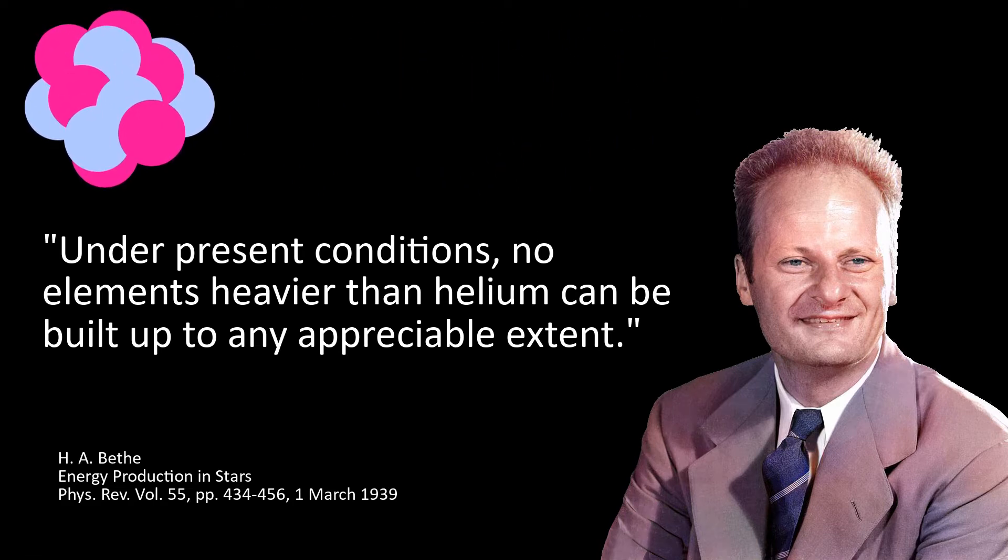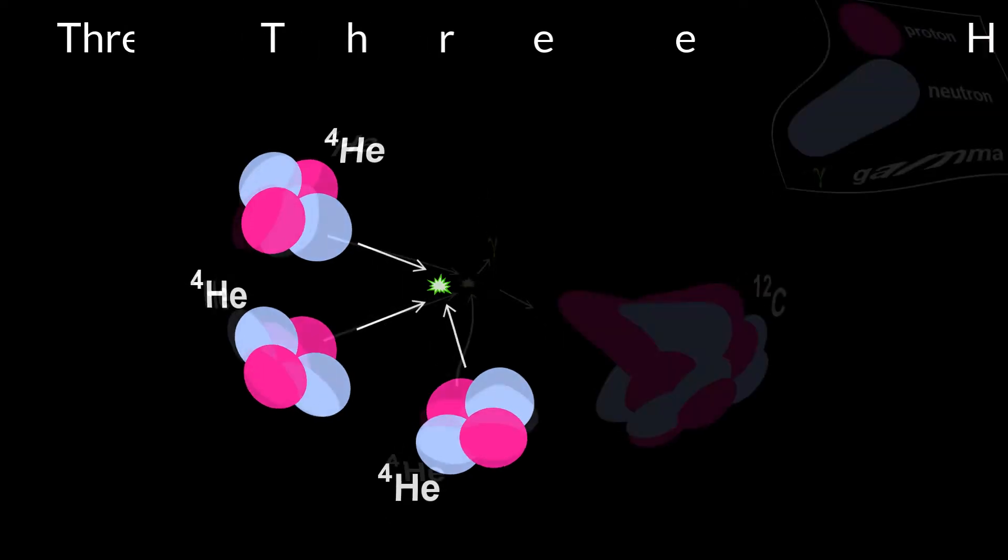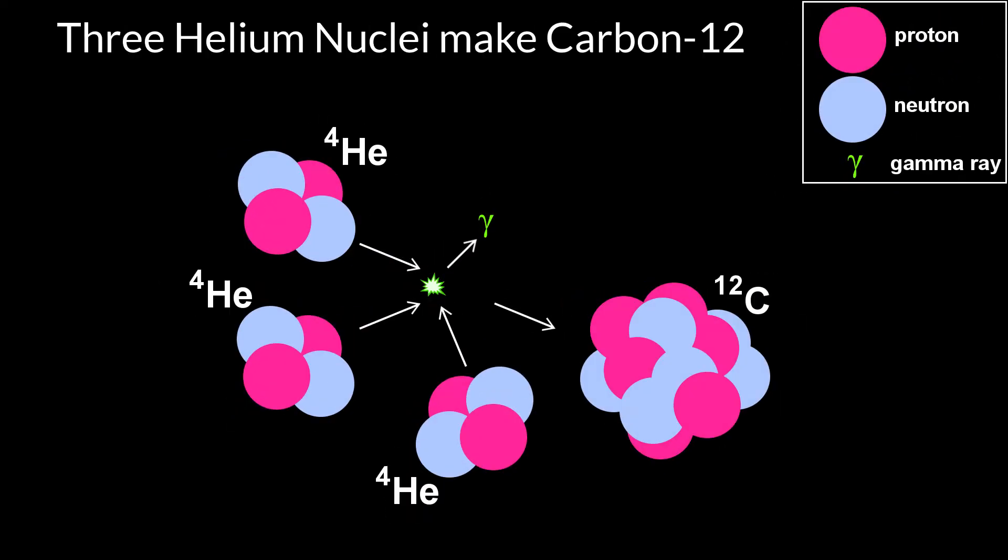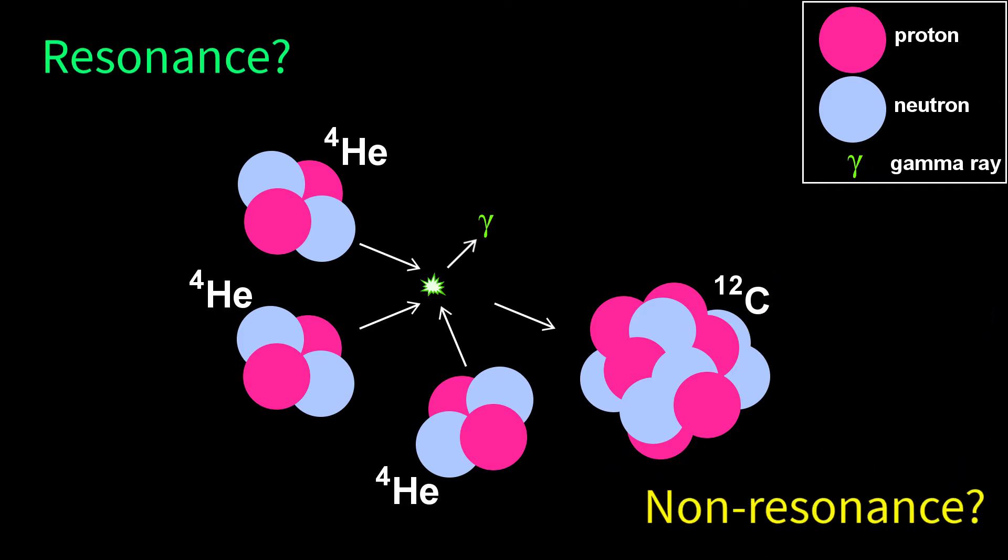Bethe investigated the possibility of making carbon by bringing together three helium nuclei, alpha particles. He found that the process would need temperatures of more than a billion Kelvin. This is pretty high, our Sun's core is about 16 million Kelvin. He assumed the coming together of three alpha particles was a non-resonance process. What do we mean by a resonance or non-resonance process? These concepts are crucial to carbon's existence.